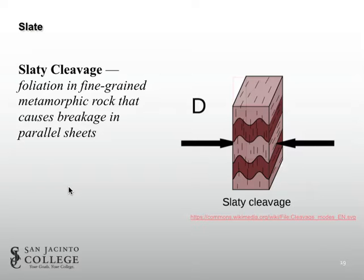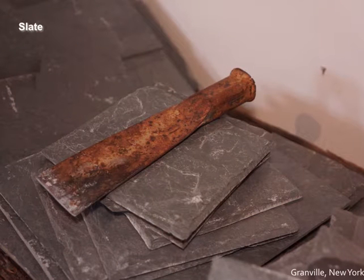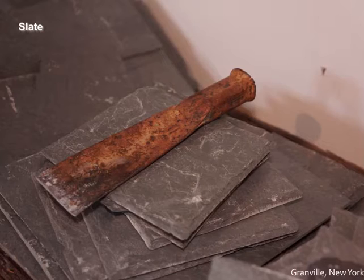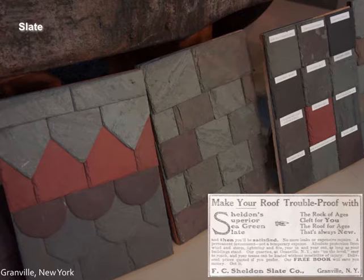When you see your slate in lab, you'll be able to say this looks like a cheese board, a shingle, a billiards table, or a chalkboard — because slate has been used for all of these purposes, because it can be split into very smooth parallel layers. The next couple photographs are from a slate museum in the town where my parents' property was. This tool is used to break the slaty cleavage apart, and for this reason slate is very useful for creating roofing tiles. You can also see all of the different colors that slate comes in.